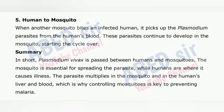Summary: Plasmodium vivax is passed between humans and mosquitoes. The mosquito is essential for spreading the parasite, while humans are where it causes illness. The parasite multiplies in the mosquito and in the human's liver and blood, which is why controlling mosquitoes is key to preventing malaria.